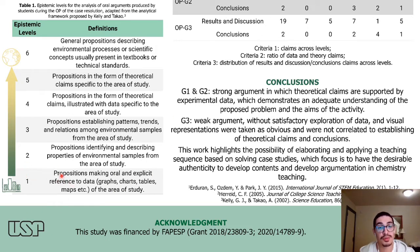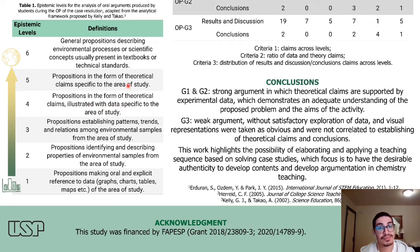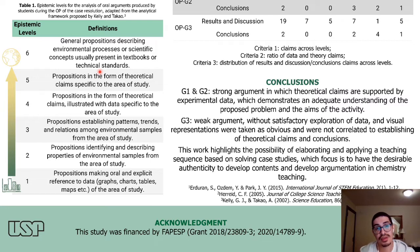At the lowest level, level one, we have propositions making direct and explicit reference to data presented in graphs, charts, tables, and maps. At level two, we have propositions identifying and describing properties of environmental samples from the area of study. At level three, we have propositions establishing patterns, trends, and relations among environmental samples from the area of study. At level four, we have propositions in the form of theoretical claims illustrated with data. At level five, we have propositions in the form of theoretical claims specific to the area of study. And at the highest level, level six, we have general propositions describing environmental processes or scientific concepts usually present in textbooks or technical standards.